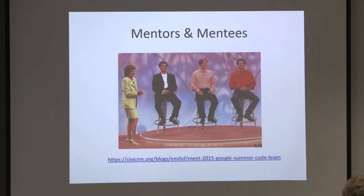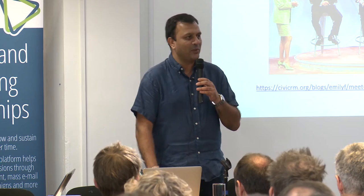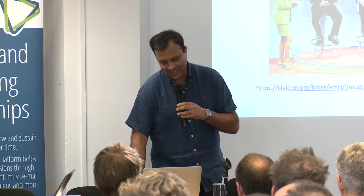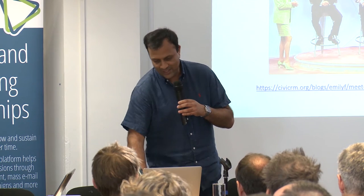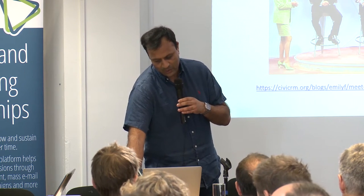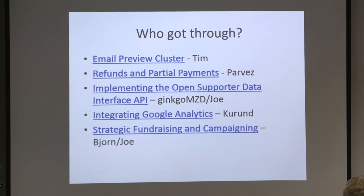Google Summer of Code is made up of mentors and mentees, and the best way I could put it is like a blind date — you get to ask each other questions, work out if you're going to be compatible, and then you finally get to see what you've ended up with. There's a link on that slide where you can see who the team from the CiviCRM side were. The projects that we ended up with were these five.